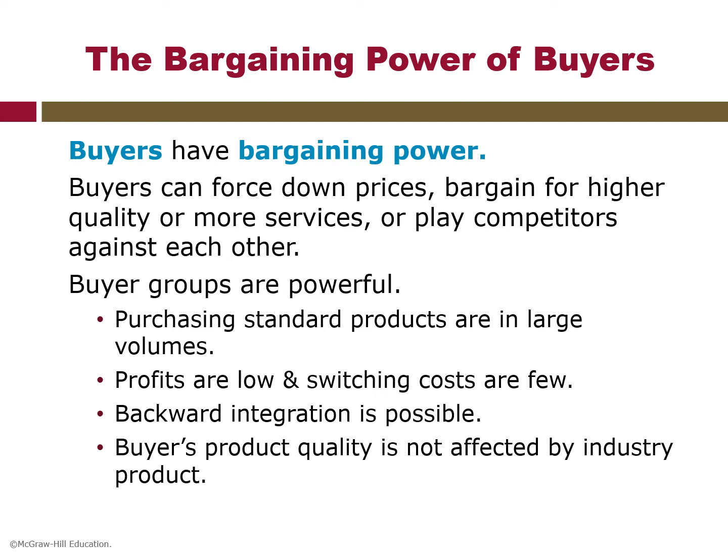Now we continue with the bargaining power of buyers. Buyers can threaten an industry by forcing down prices, bargaining for higher quality products or services, and playing competitors against each other. These actions will erode industry profitability. The company's profit will decline due to the power of buyers. The power of each large buyer group depends on attributes of the market situation. Buyer groups are powerful when they are concentrated or purchase large volumes relative to seller sales — when a large percentage of a supplier's sales are purchased by a single buyer, the importance of that buyer's business to the supplier increases.